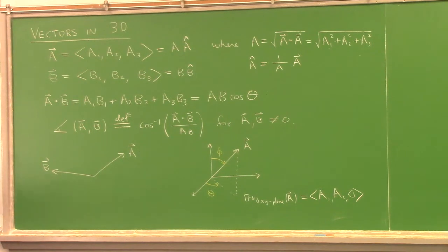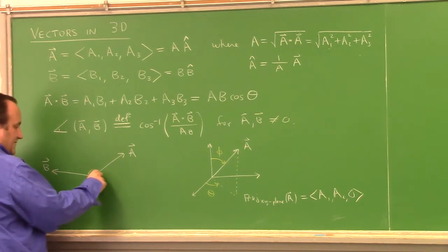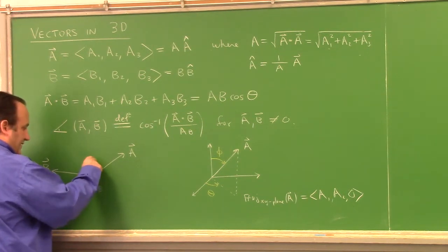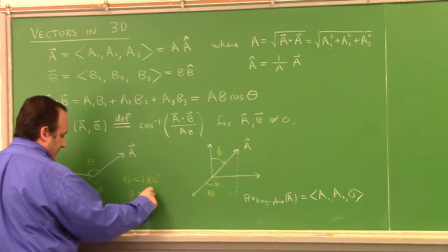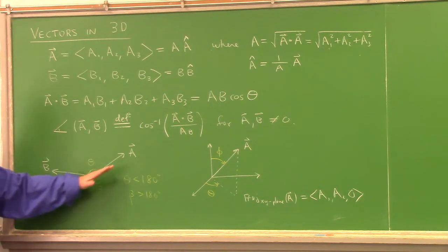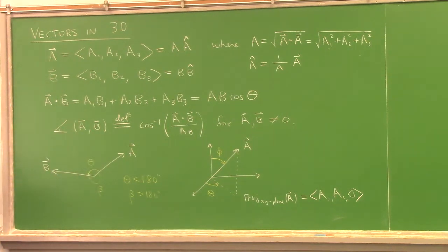Going back to the question about angles between two vectors: if this is theta (less than 180°) and beta is greater than 180°, the inverse cosine's range is between 0 and 180 degrees — so it gives you the angle less than 180. That's because we use inverse cosine. There are two angles to describe how far apart two vectors are; we choose theta (the one less than 180°) to describe the angle between two vectors. You can find the other one once you know the first.